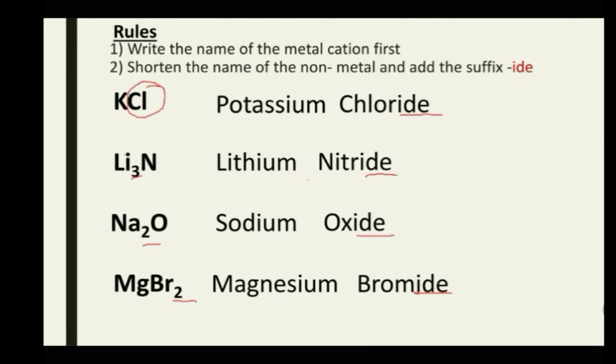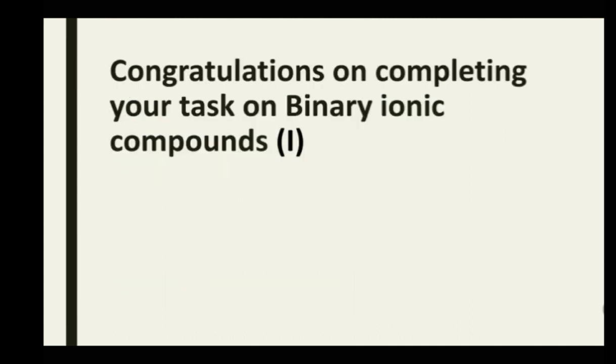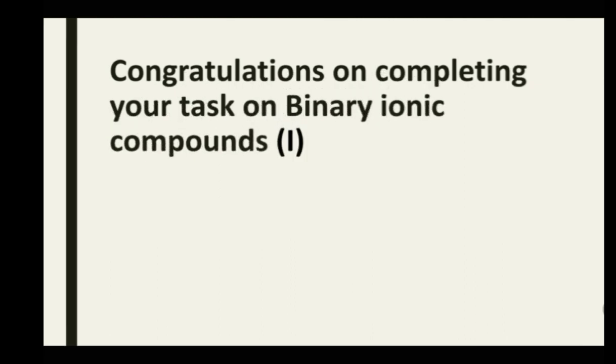Notice that all these binary compound names end in '-ide.' The clue to all binary ionic compounds is that they end in '-ide,' so anytime you come across a compound with an '-ide' ending, it is a binary compound. Congratulations on completing this lesson on binary ionic compounds, Type 1. Hope to see you next time — goodbye!